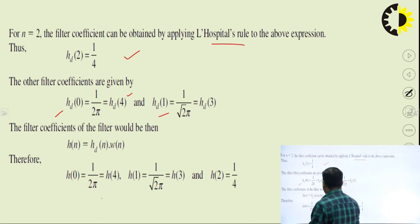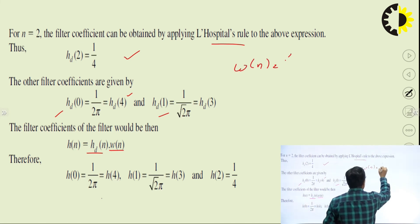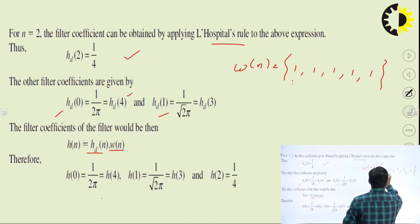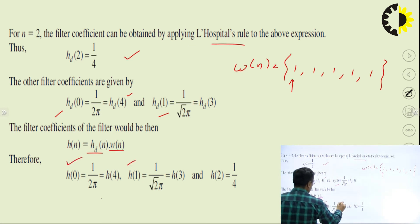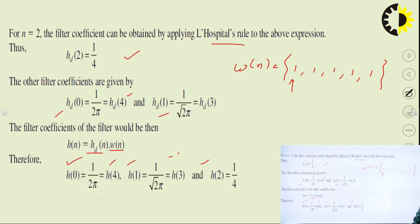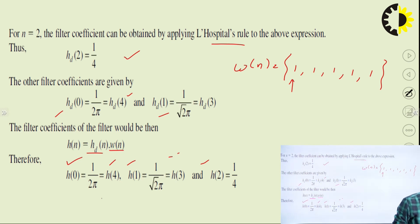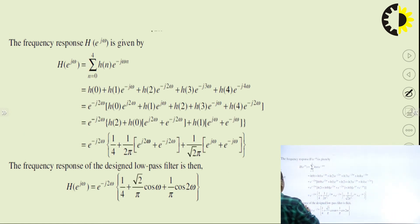Since W(n) = 1 for n = 0 to 4 (rectangular window), H(n) = h_d(n)·W(n) = h_d(n). So the filter coefficients H(0), H(1), H(2), H(3), H(4) are obtained directly. These are your filter coefficients for the FIR digital filter. If you want the frequency response, take the Z-transform of h(n) and calculate accordingly.